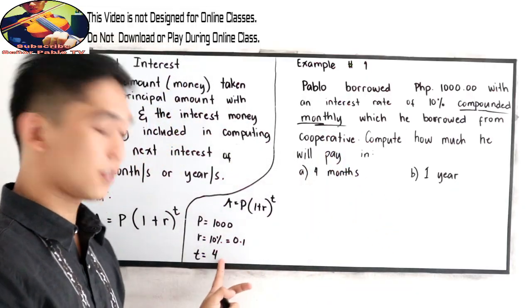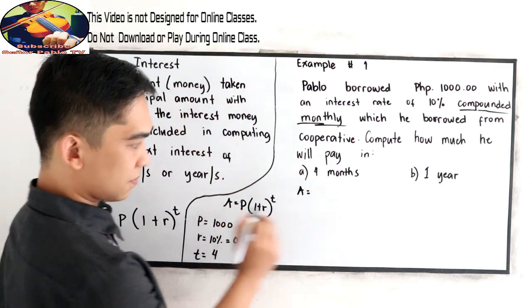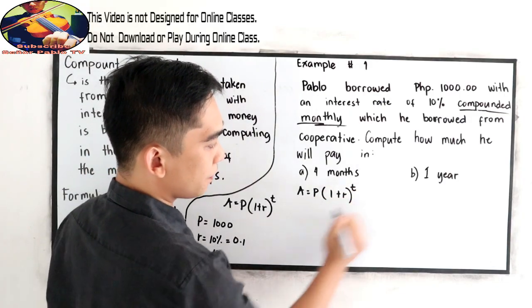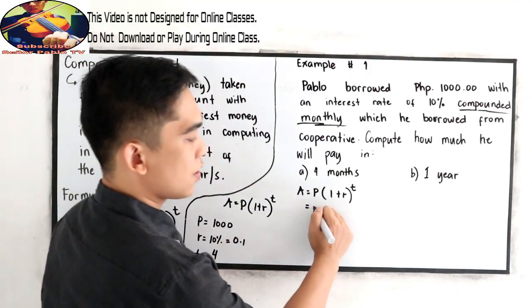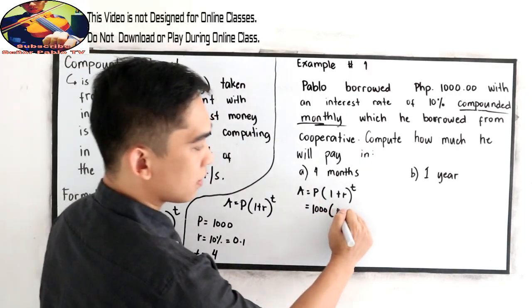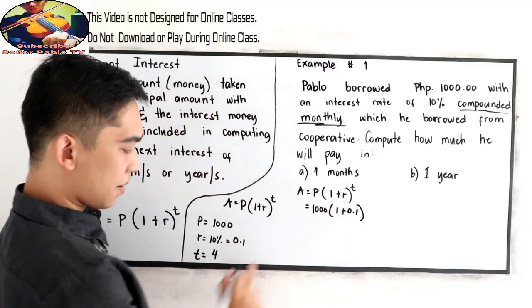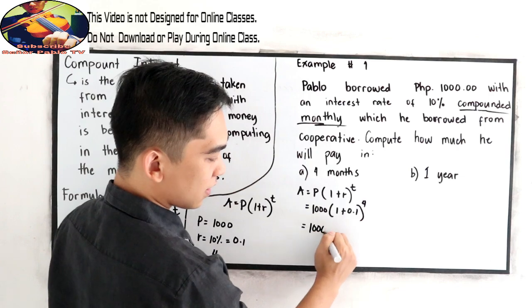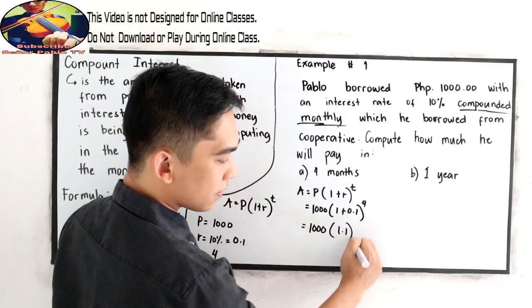So in letter A, we have 4 months. So substitute, A is equal to P times 1 plus R, raised to T. P is 1,000 times 1 plus, rate is 0.1, and our time is 4. So 1,000 times 1 plus 0.1, that is 1.1, raised to 4.